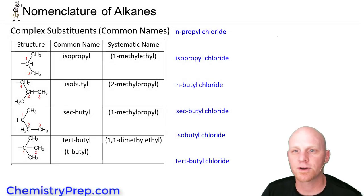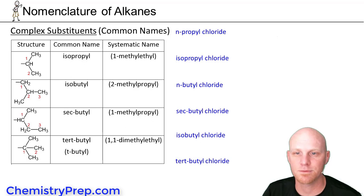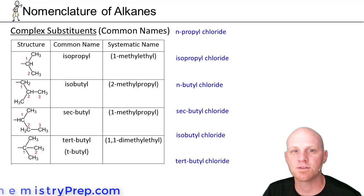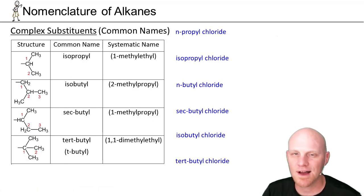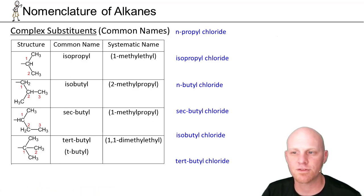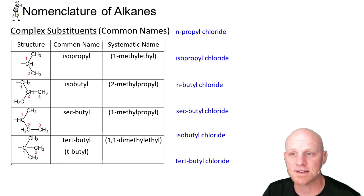It turns out for some of the smaller complex substituents, you've also got common names you're responsible for, especially for the 3 and 4 carbon cases. Some classes might even stretch to 5, but I'm only going to cover the 3 and 4. That's what's typically required for most classes.